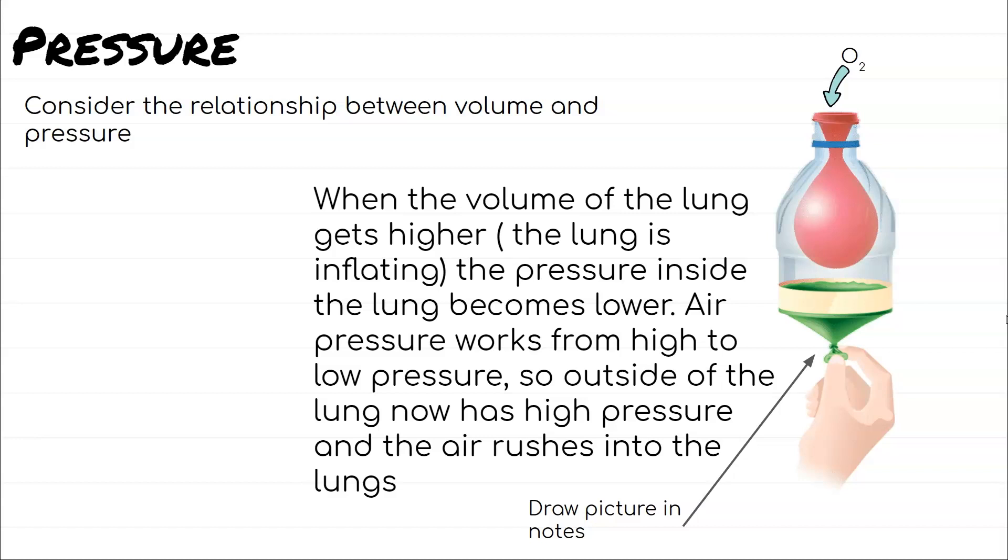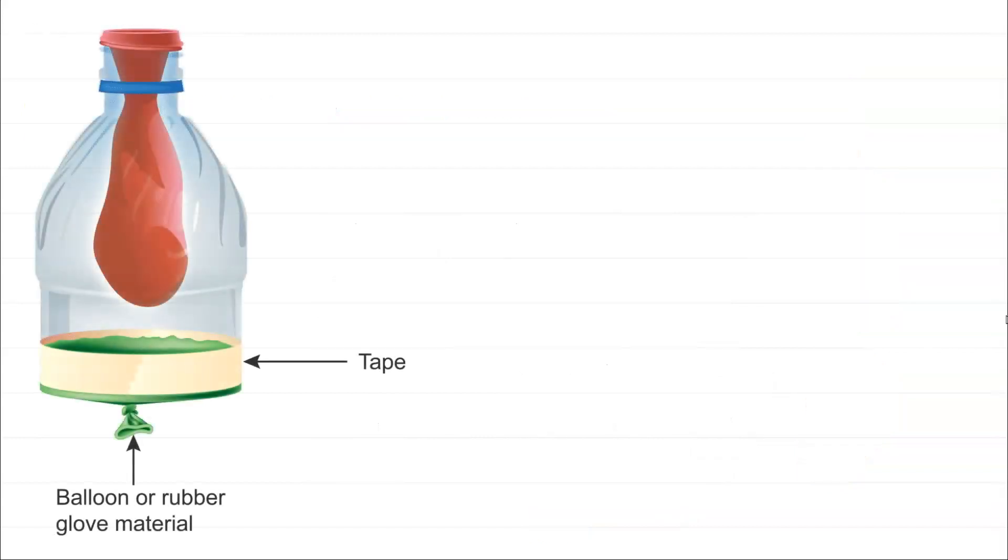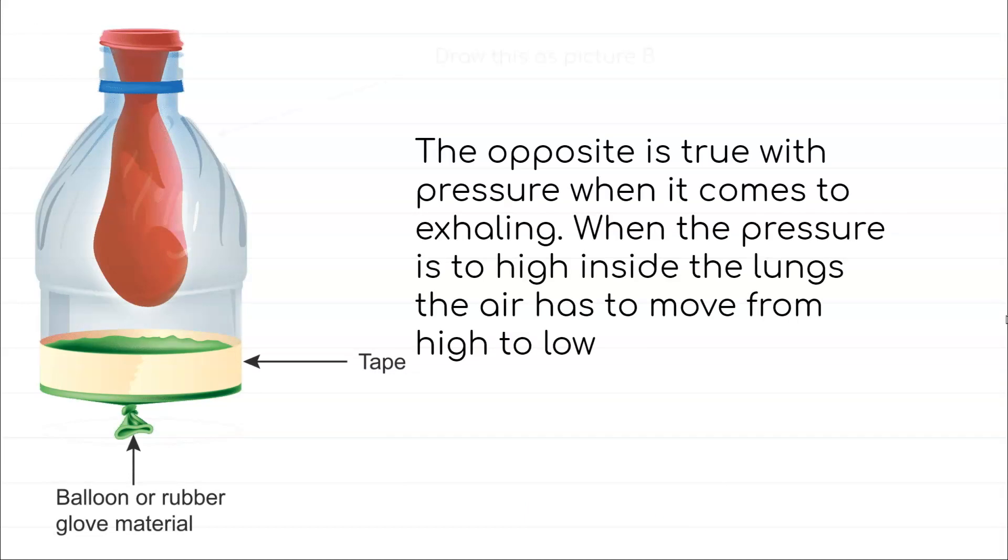So our volume of our lung is getting bigger as we inflate it, but the pressure is higher outside our body than inside our body, and that's why we can push air into our lungs. When we actually breathe out, we're going to draw this picture now. Breathing out represented again by this balloon, you can see this balloon is no longer filled with air. So what ends up happening is it's the opposite with pressure when we're exhaling.